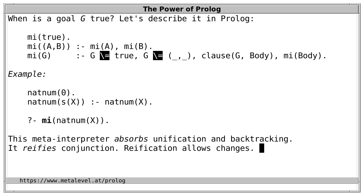Having reified conjunction, we can change the way conjunctions are interpreted. For example, here we've implemented Prolog's default execution strategy where goals in a clause body are interpreted in the order stated — first A, then B. But we could also interpret B first, then A. Reification gives us freedom to change these features. Ideally, the effort to reify something should be roughly proportional to the level of detail we're interested in — and Prolog is very good at that too. It only takes very little effort to reify conjunction, and slightly more to reify the binding environment.